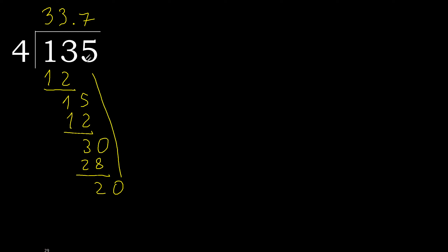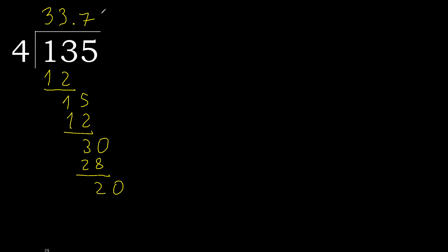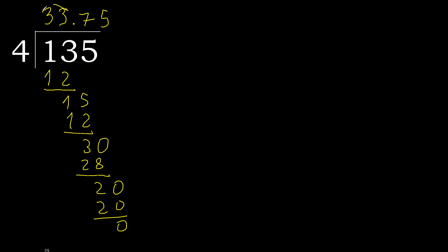Complete. Decimal point is here. Bring down 0, making 20. 4 multiplied by 5 is 20. 20 minus 20 is 0, therefore finish. 135 divided by 4 equals 33.75.